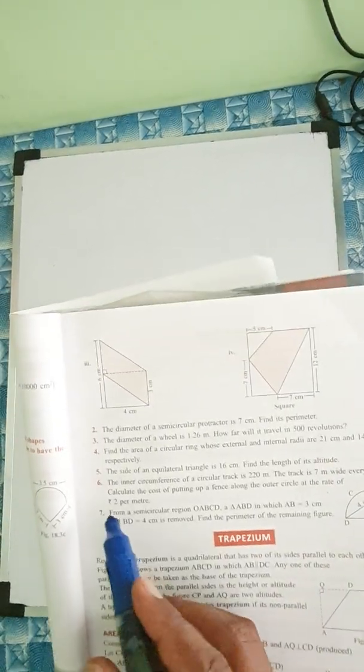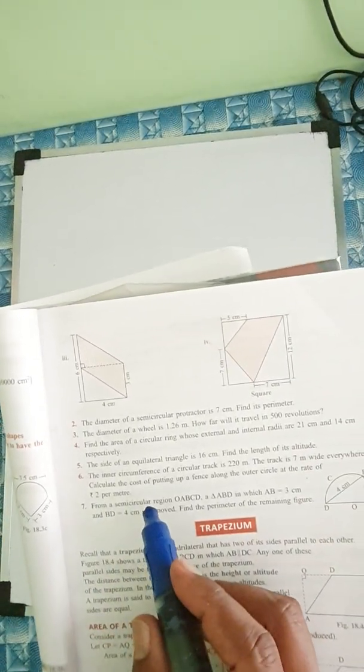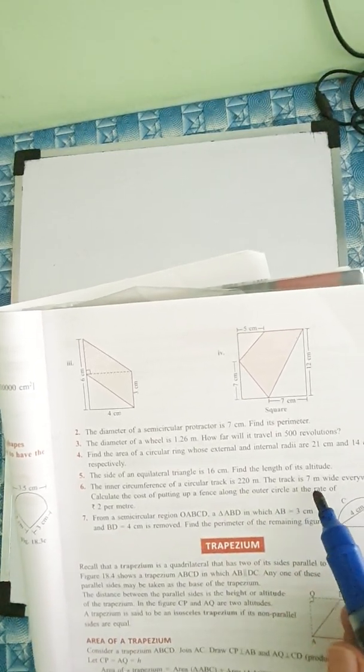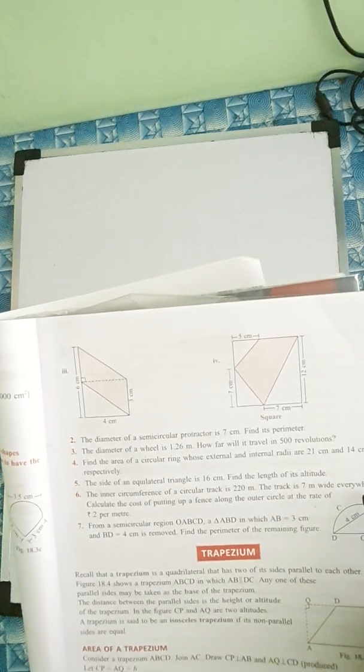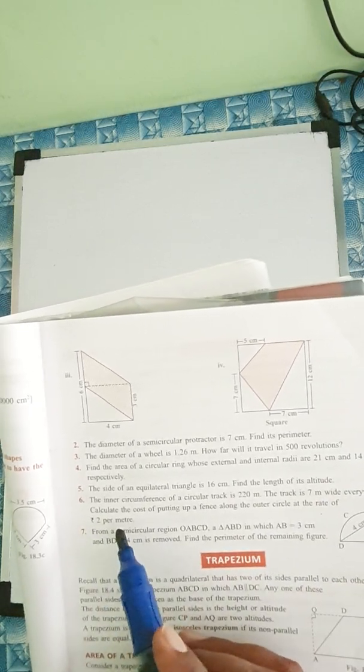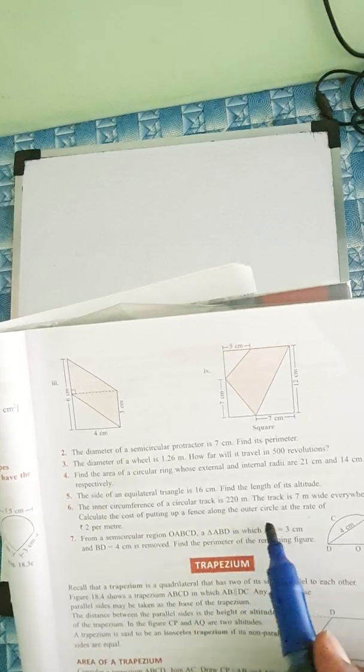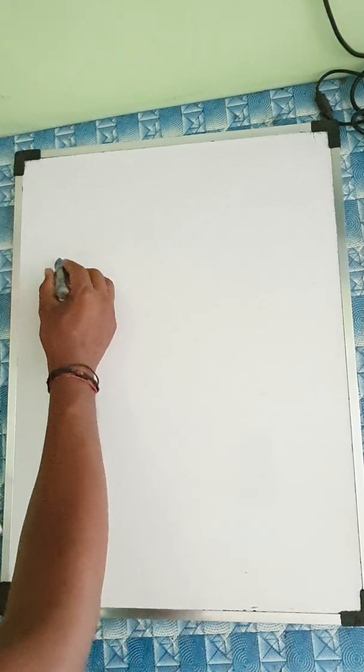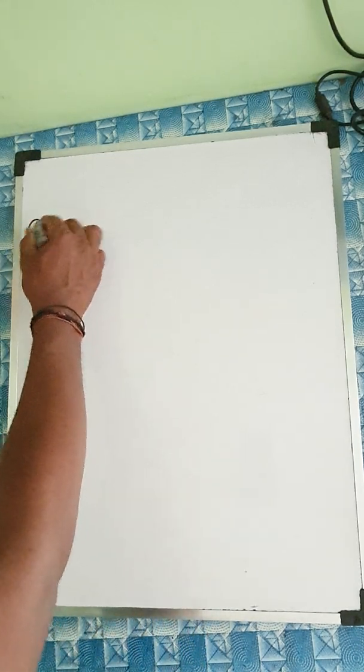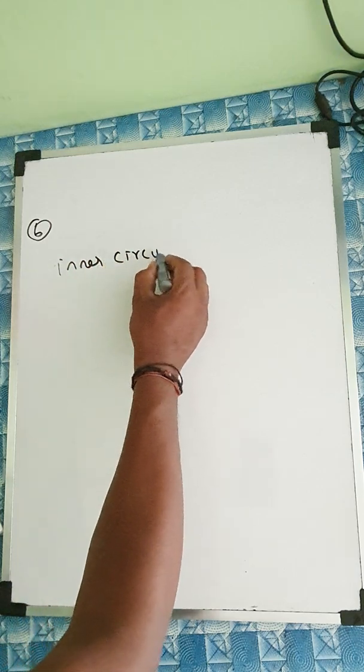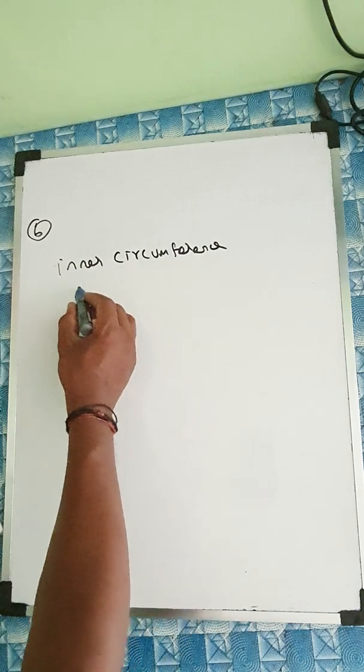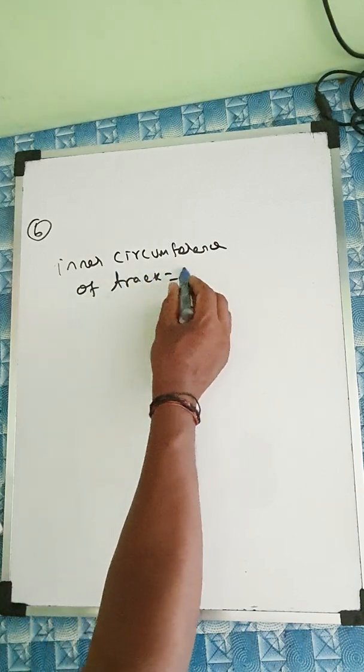Exercise 18A, question number 6. The inner circumference of a circular track is 220 centimeter. The track is 7 meter wide everywhere. The inner circumference of the track is given 220.